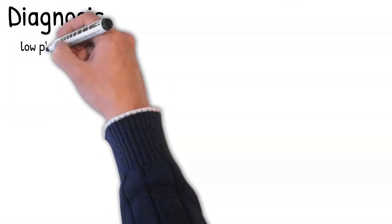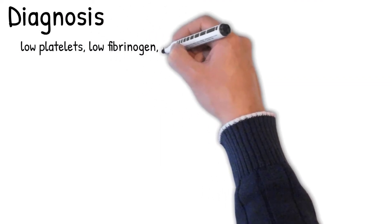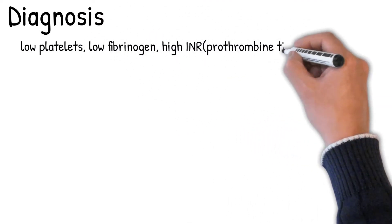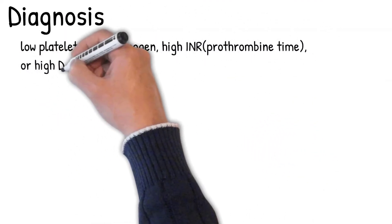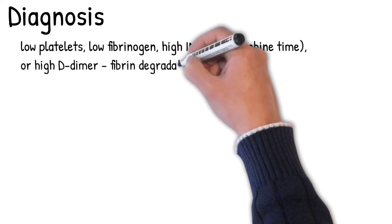Diagnosis involves finding low platelets, low fibrinogen, high INR (prothrombin time), or high D-dimer, which is a fibrin degradation product.